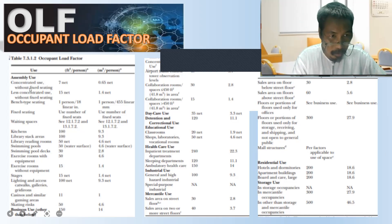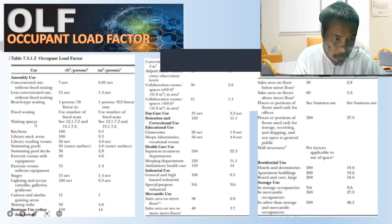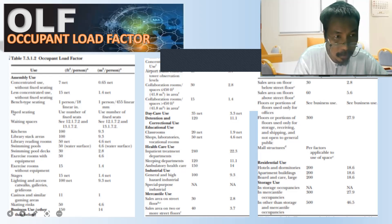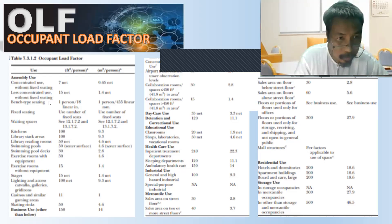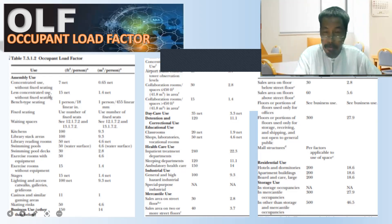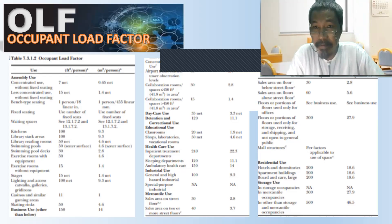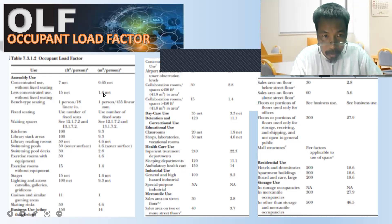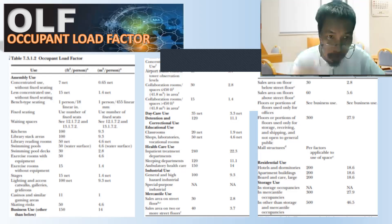For assembly use, there are different categories: concentrated use without fixed seating, bench-type seating, and fixed seating. For TCO — which is a school — the applicable category is less concentrated use without fixed seating, with an occupant load factor of 1.4 square meters per person.